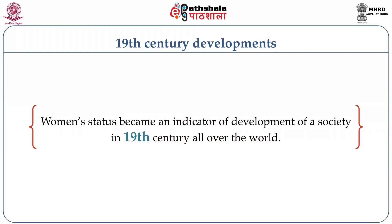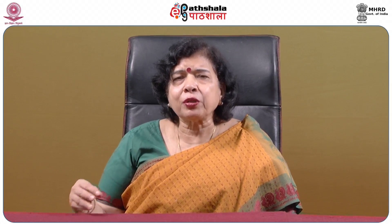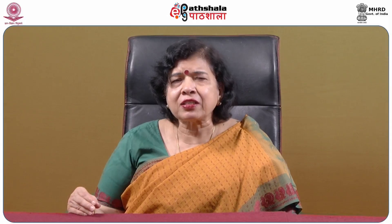If we look at the 19th century, it was then that for the first time women's status became an indicator of development of society all over the world. The British were criticizing us, saying we were not fit to rule ourselves because we were not treating our women properly. There were so many issues in our society like child marriage, illiteracy, sati, the way widows were treated, and these were cited as reasons why the British were not giving us self-government.